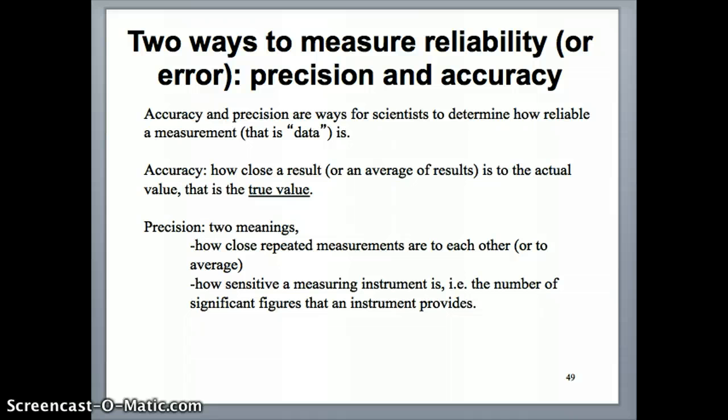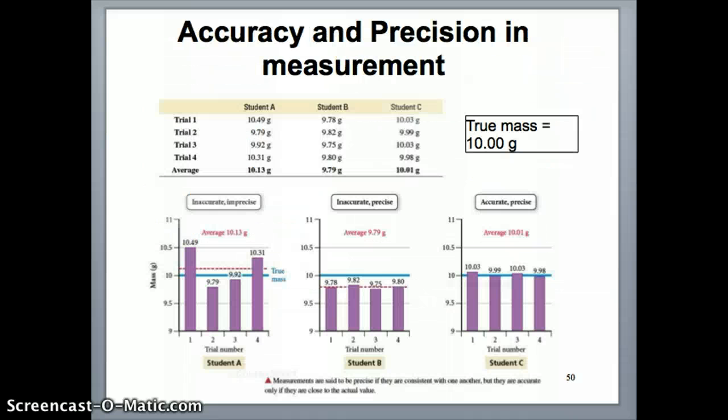Now let's talk about accuracy and precision in the context of the data. So for example, here's three different students, let's think about three different scientists, and they're making measurements of masses of a particular object, and they're making the measurement four times for each student. As you notice here, just look at this graph for now. This is the four trials, and each of the trial, you record a certain mass. The mass is indicated by the number on the top of the bar.